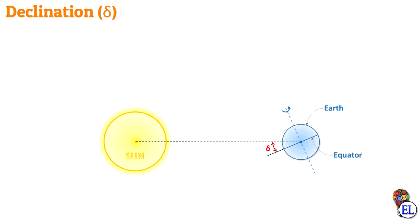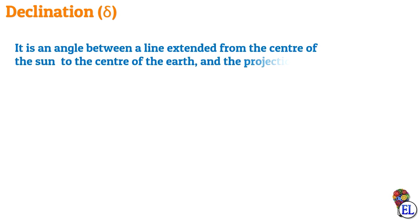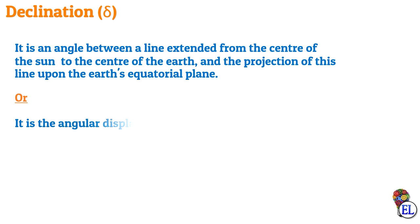So now let us define declination angle. It is an angle between a line extended from the center of the sun to the center of the earth and the projection of this line upon the earth's equatorial plane. Or we can say that it is the angular displacement of the sun from the plane of the earth's equator.